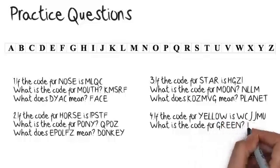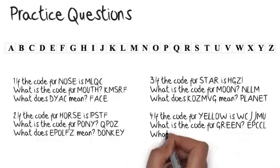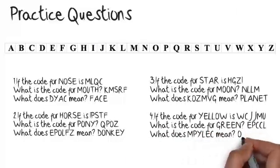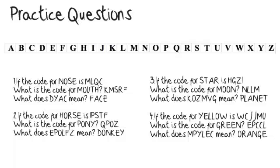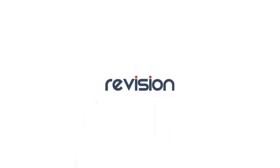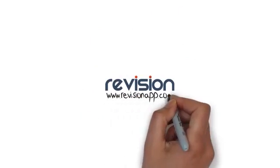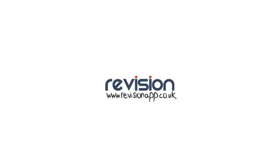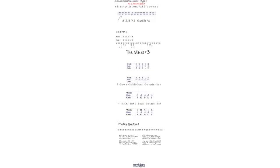Practice question three: if the code for STAR is HGZI, what is the code for MOON? What does KOZMVG mean? Practice question four: if the code for YELLOW is WCJJMU, what is the code for GREEN? What does MPYLEC mean?